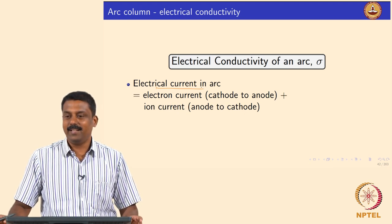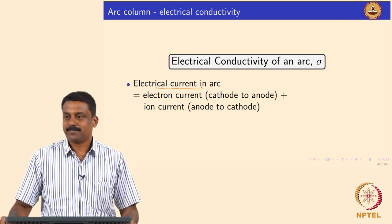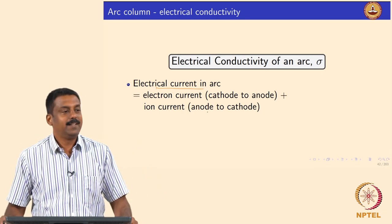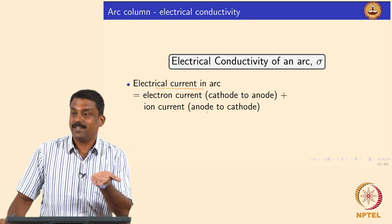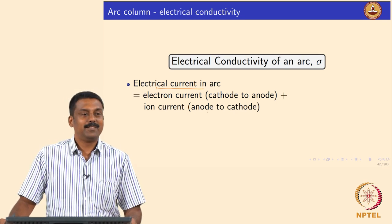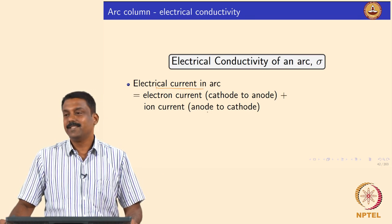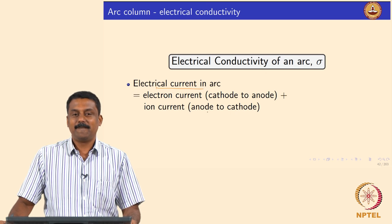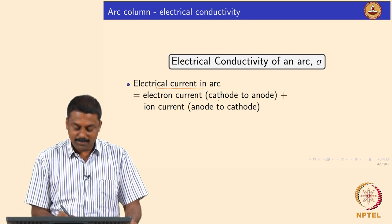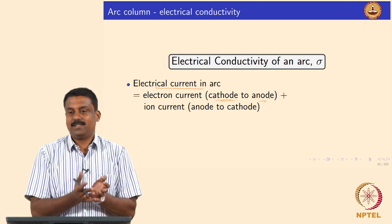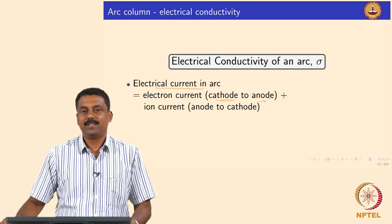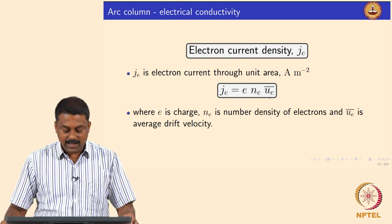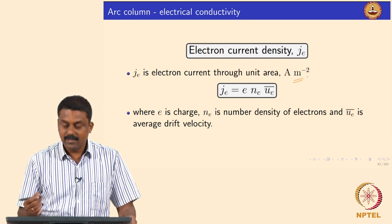The total current equals the electron current plus the ion current. We can calculate each and use them to determine the resistance. If we know the length, area, and mass, we can calculate the conductivity or resistivity. The electron current is defined as the amount of electrons traveling from cathode to anode per unit area — that is the current density in amperes per square meter.